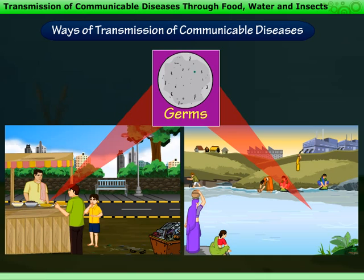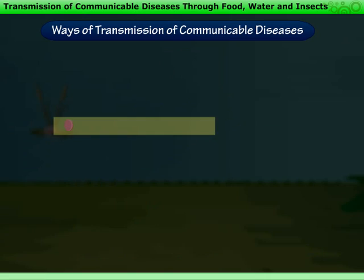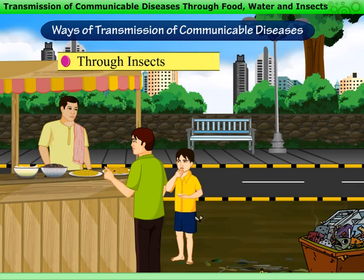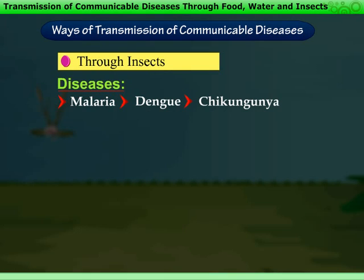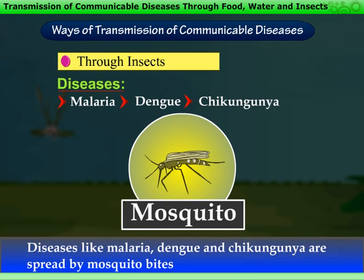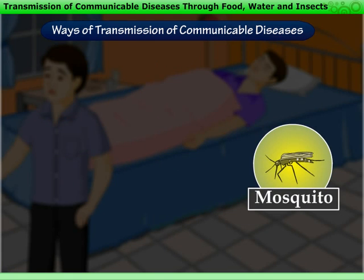One more way of spread of diseases is through insects. House flies carry the germs from garbage cans and deposit them on uncovered food and other items. Also, diseases like malaria, dengue and chikungunya are spread by mosquito bites. Some mosquitoes act as a carrier for disease causing germs.